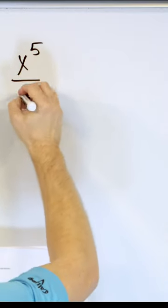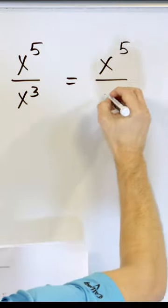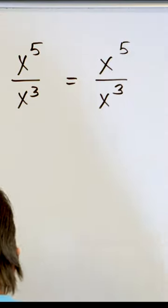x to the fifth divided by x to the third. Let me rewrite because I'm going to do it the way I typically do it on my paper because I want to teach you, I think, the best way of doing it.